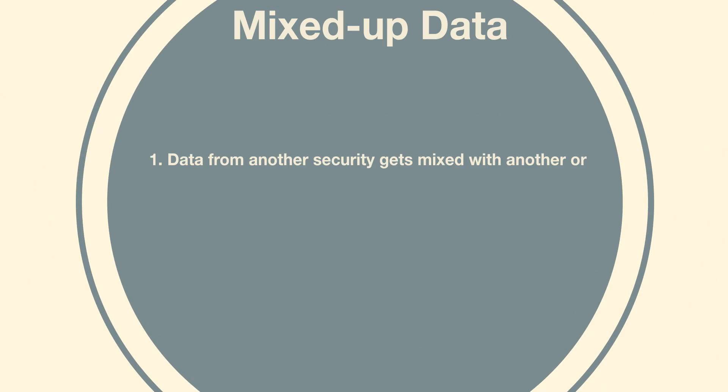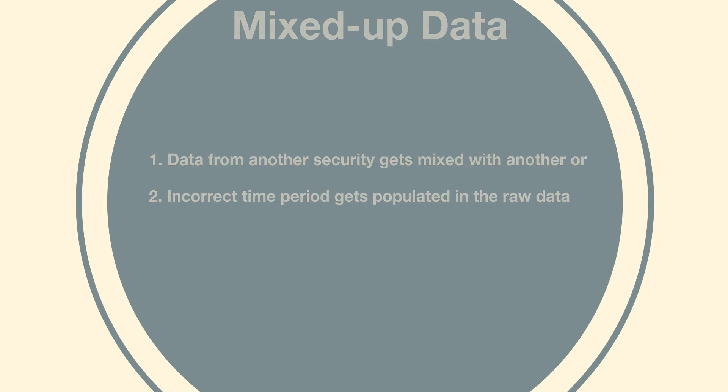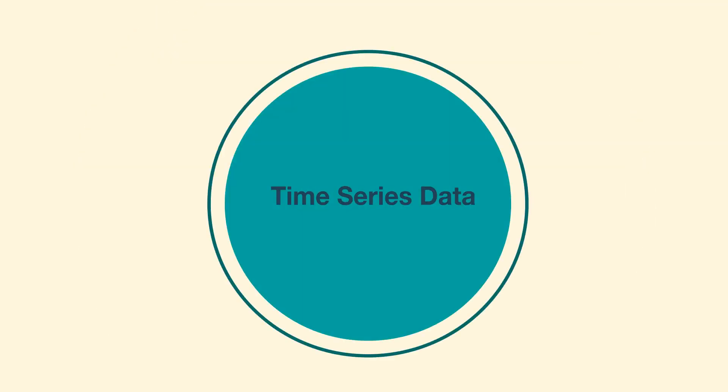Data mix-up can occur when data from another security or from an incorrect time period gets populated in the raw data. Again, this issue can be hard to detect and needs proper checks and balances in the code.